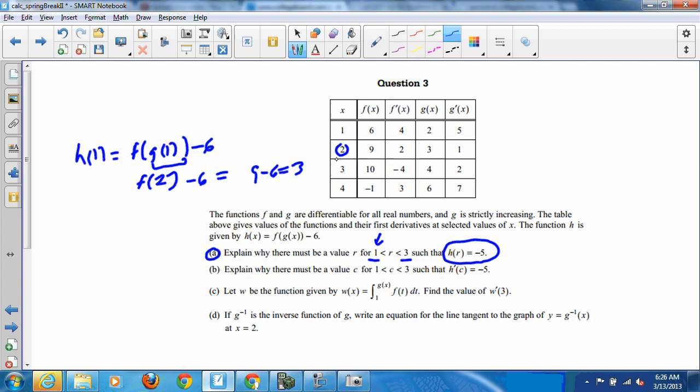So somewhere over here at 1, 3, we have our first value. And then looking at the other end, h of 3, same thing. f, g of 3, subtract 6. So g of 3, g of 3 takes me to 4. So we have f of 4 minus 6. f of 4 is negative 1 minus 6 is negative 7.